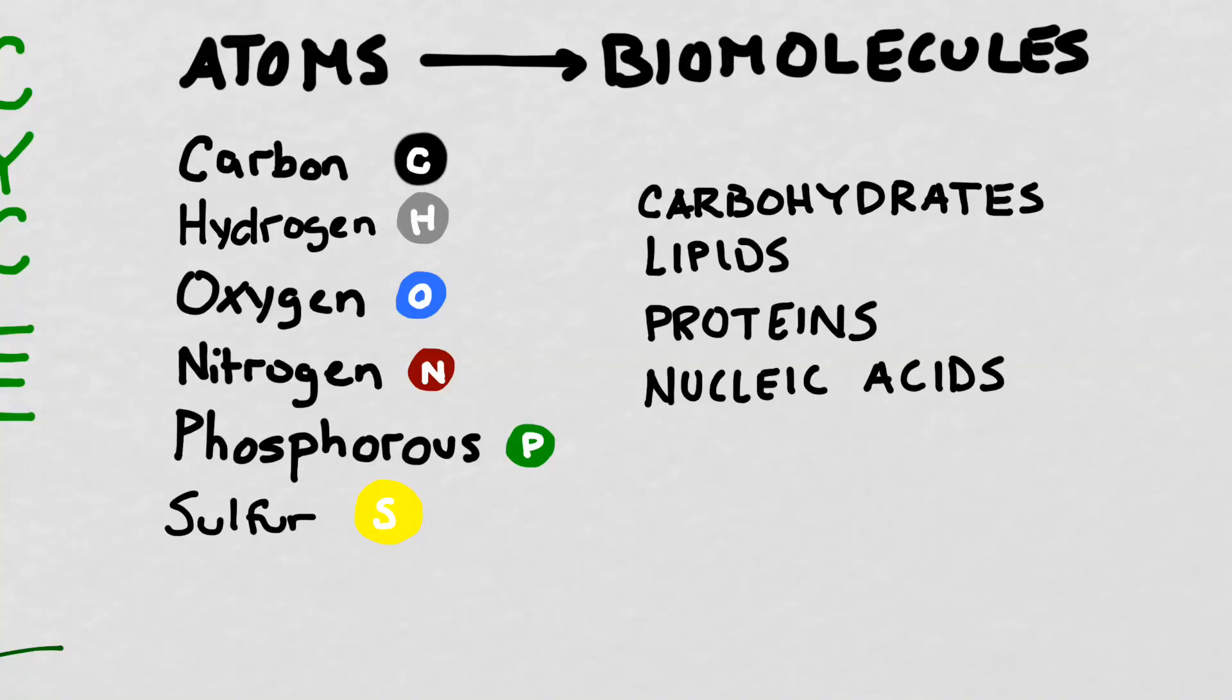There are a few different atoms you're probably familiar with from chemistry that are going to be crucial in biology. Those are going to be carbon, hydrogen, oxygen, nitrogen, phosphorus, and sulfur. All of those different atoms combine in different ways to form large molecules which we call biomolecules.